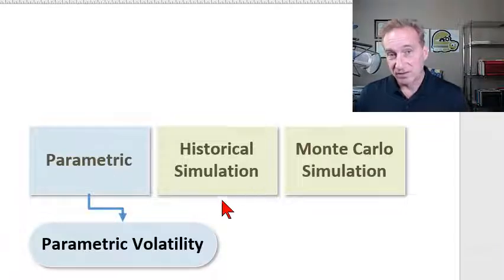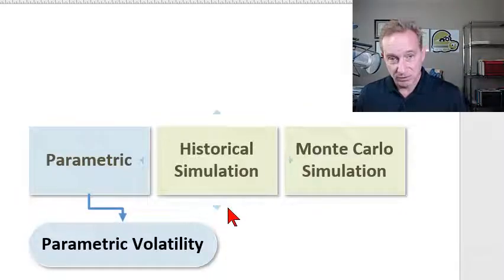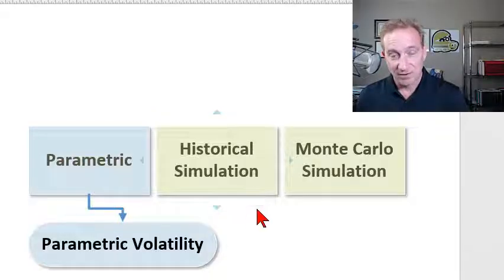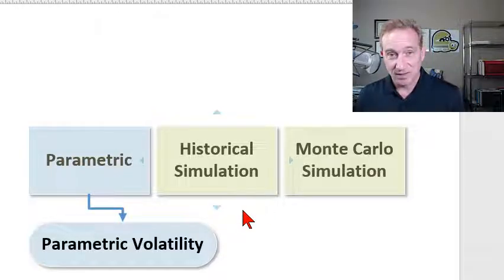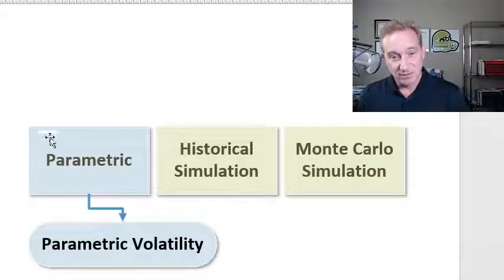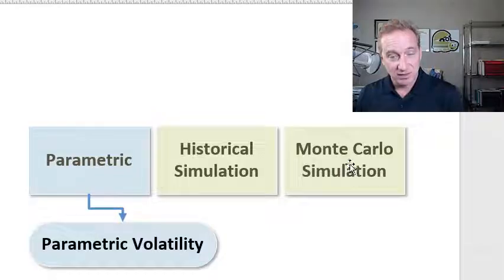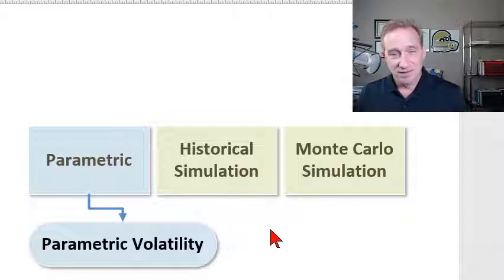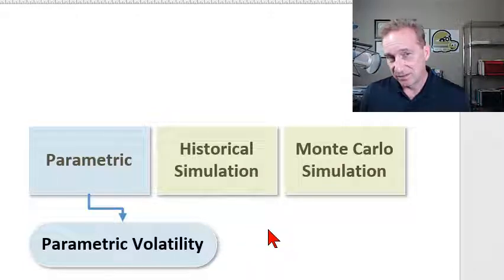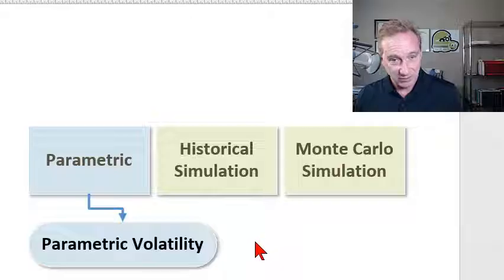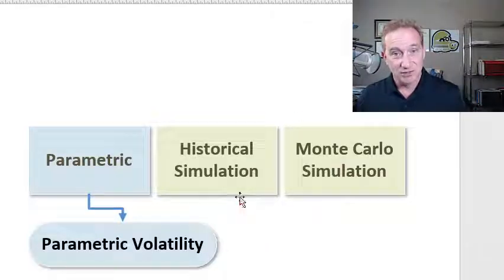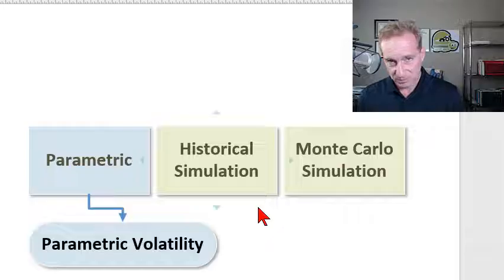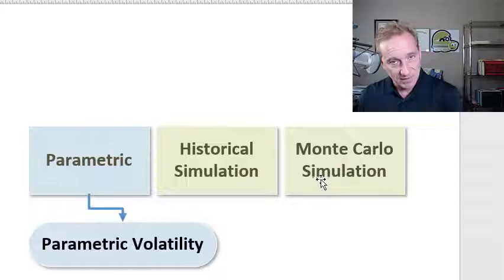This is my first overview in Topic 4 of Part 1 FRM, where the topic is called Risk Models and Valuation. We start with Value at Risk, and I've already said we have three basic approaches to Value at Risk. That first reading for FRM candidates is quantifying volatility in Value at Risk. The challenge is, what's the relationship between Value at Risk and volatility?